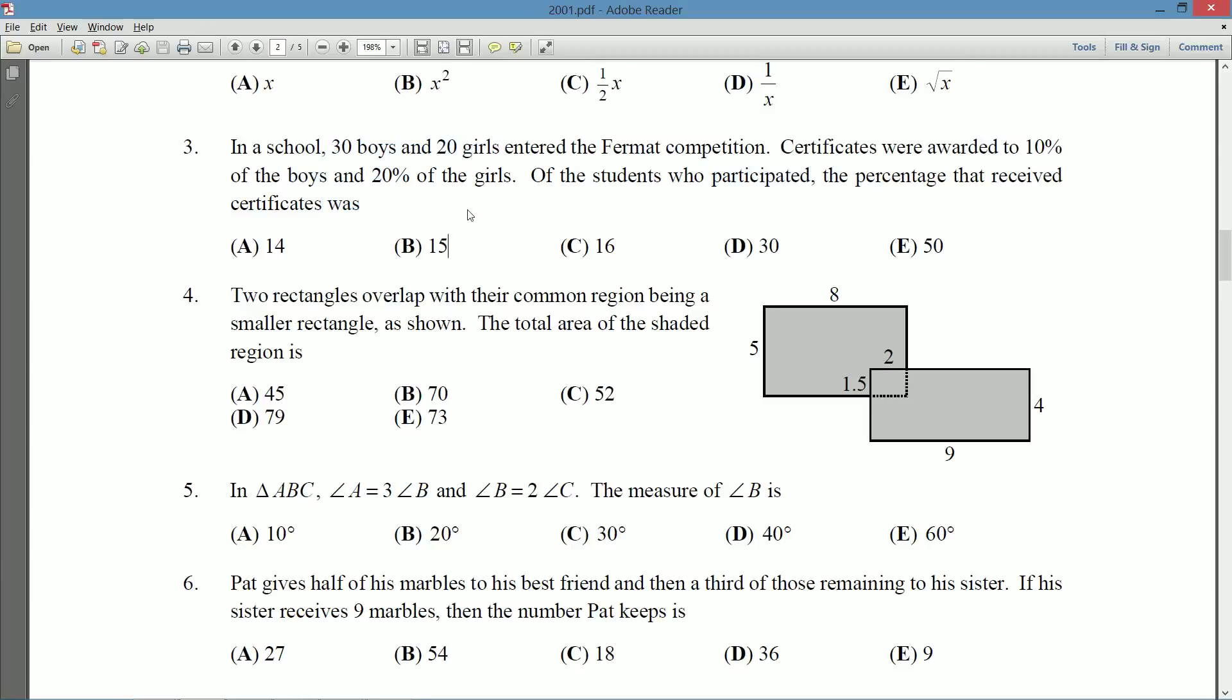So we're given a breakdown of the population into girls and boys and we're told the rate at which girls and boys, each in their separate group, earned certificates and we're asked to sort of combine that and give an overall percentage for the number of certificates. So we have all the information we actually need for this question. We need to go about and actually figure out, well, 10% of the 30 boys, how many boys actually got a certificate? 20% of the 20 girls, how many girls actually got a certificate? Once we know those hard numbers, we'll be able to add them up and make a percentage out of the total 50 students that wrote.